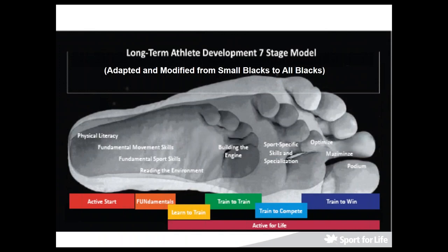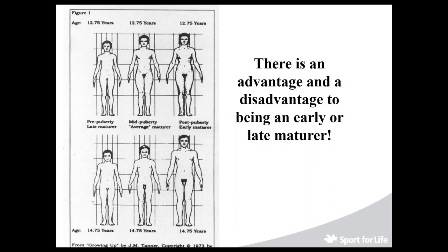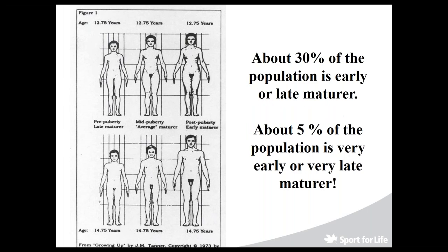We have to find developmentally appropriate programs. There is an advantage and disadvantage to being an early or late maturer. About 30% of the population is early or late maturing, and about 5% is very early or very late. The advantage of being an early maturer is being bigger and stronger, but they can become lazy because they don't have to fight for it. If late maturers don't quit despite being smaller and less powerful, they will actually do well — and we know that late maturers are the real talents.